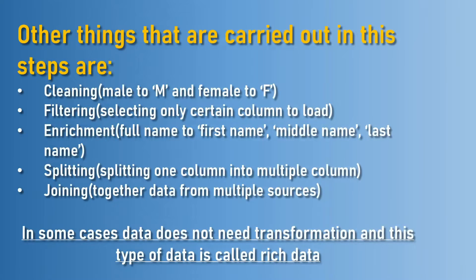Other operations carried out in the transformation step include: cleaning, which means removing noise values or simplifying things, like converting the word 'male' to 'M' and 'female' to 'F'; filtering, which selects only certain important columns to load; enrichment, which improves data quality, for example separating a full name into first name, middle name, and last name; and splitting, which is the process of splitting one column into multiple columns. There is also joining, which brings data together from multiple sources.